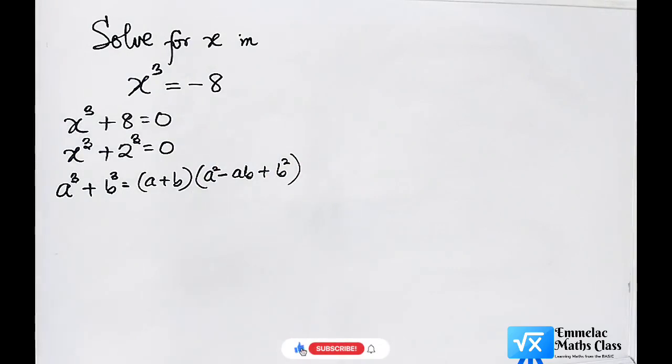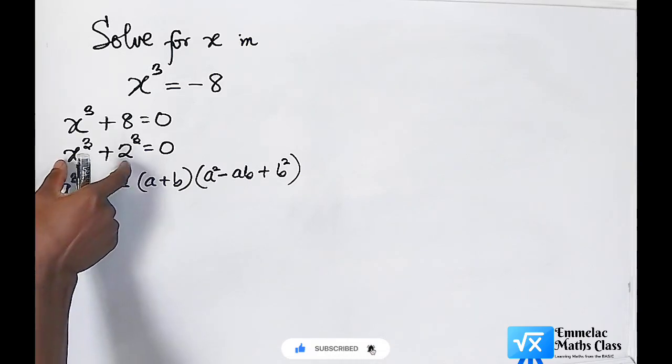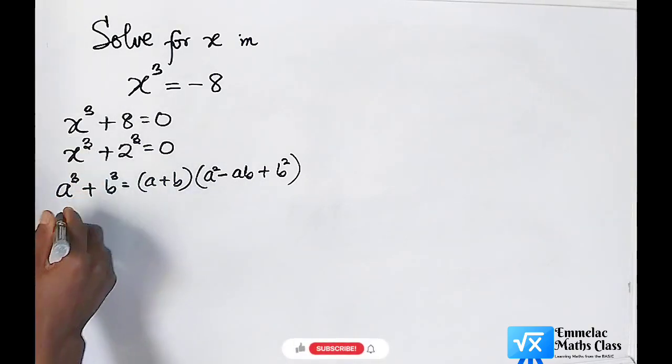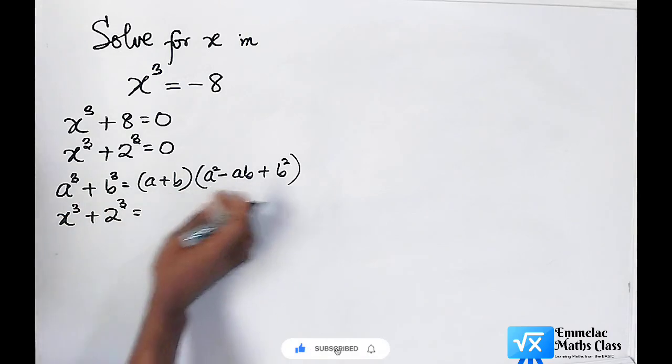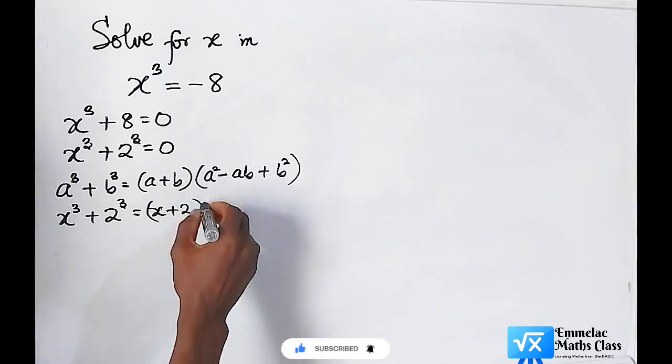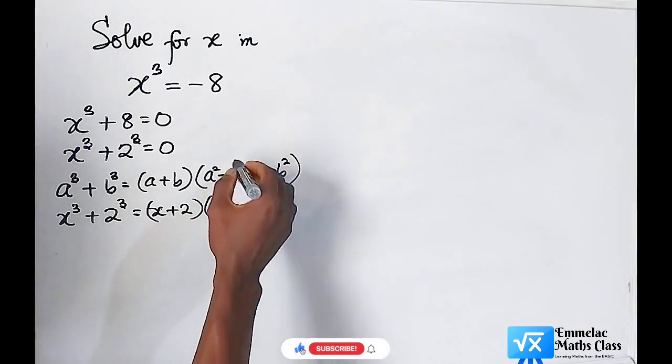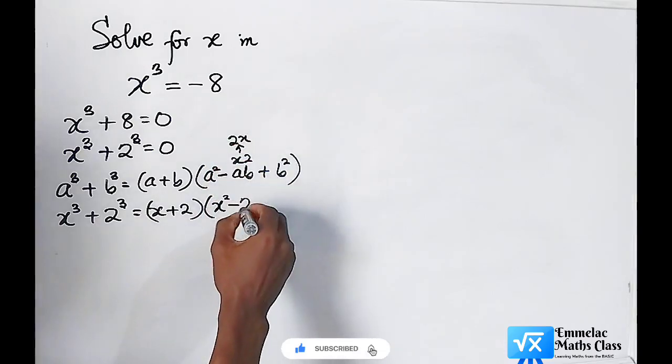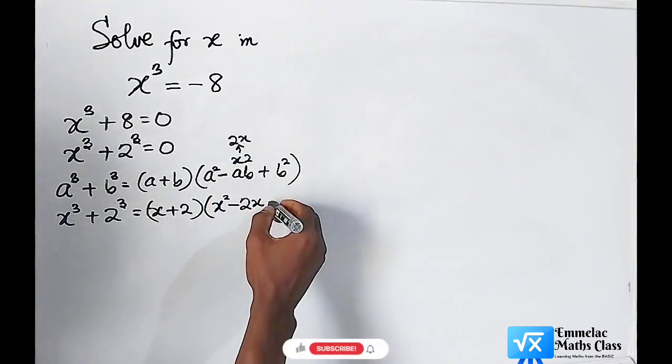You can see that this algebraic expression is the same as the equation we've just gotten. So it implies that x³ + 2³, following this expression, will give us (x + 2) into (x² - 2x + 4).